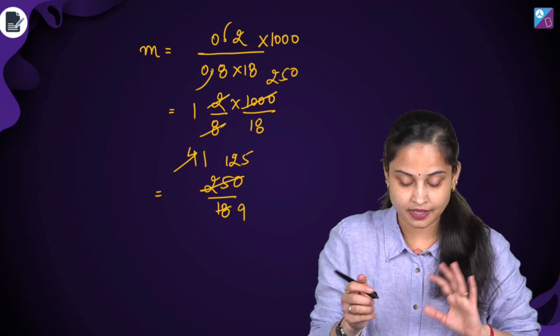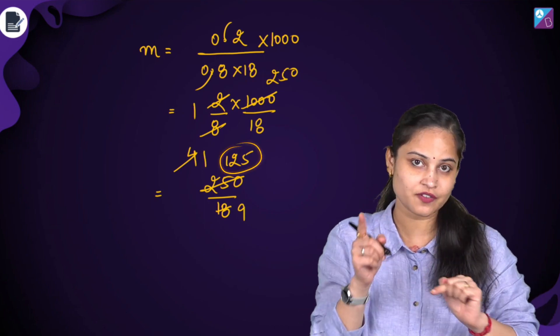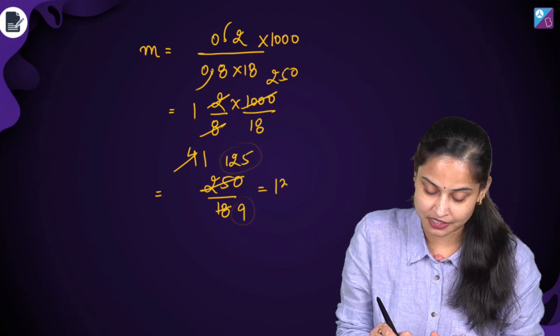So 250 is 2 times 125 and 18 is 2 times 9. 125 divided by 19—not 19, 9. So 125 divided by 9 comes out to be 13.88.